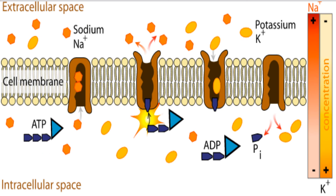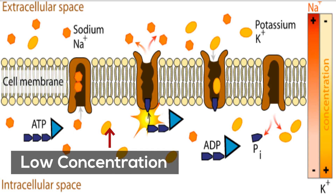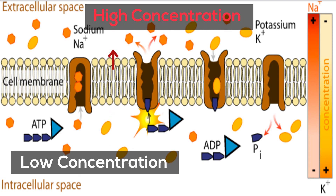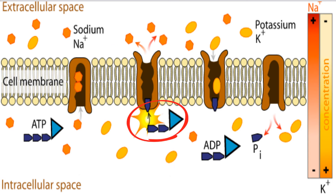A membrane pump, such as a sodium-potassium pump, moves substances up the concentration gradient, or from a low concentration to a high concentration. A sodium-potassium pump moves three sodium ions for every two potassium ions into the cell, and uses ATP as energy. The channel changes its shape and allows the sodium and potassium to move into and out of the cell.